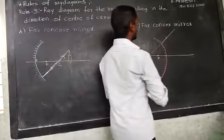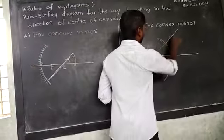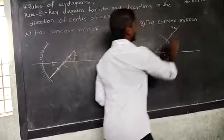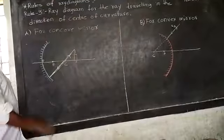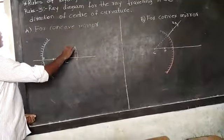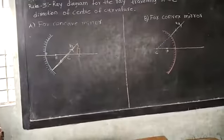It get reflected. Only reflected on the same line. It get reflected, so this is the rule 3, or ray 3.